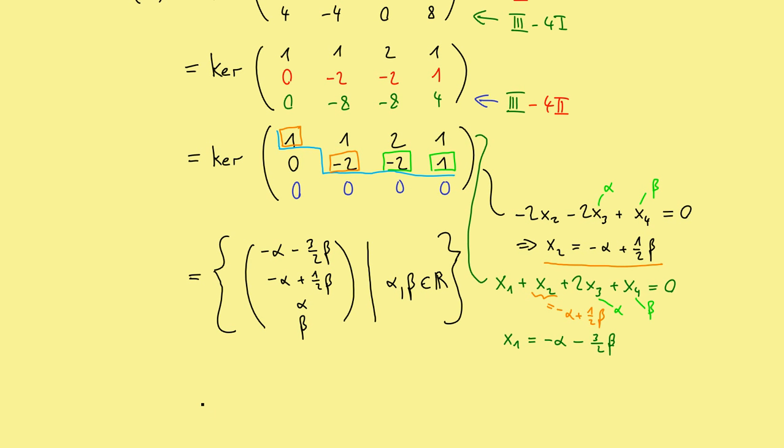Of course we can split this up in two vectors. We use the alpha coefficient. Then we have the vector minus 1, minus 1, 1 and 0, plus beta in the vector with coefficients in front of beta, so minus 3 half plus 1 half, 0 and 1. And the same again, we have to mention alpha and beta coming from the real numbers. So, obviously this is the same set. We just wrote the vector in another way. And this is the whole kernel.